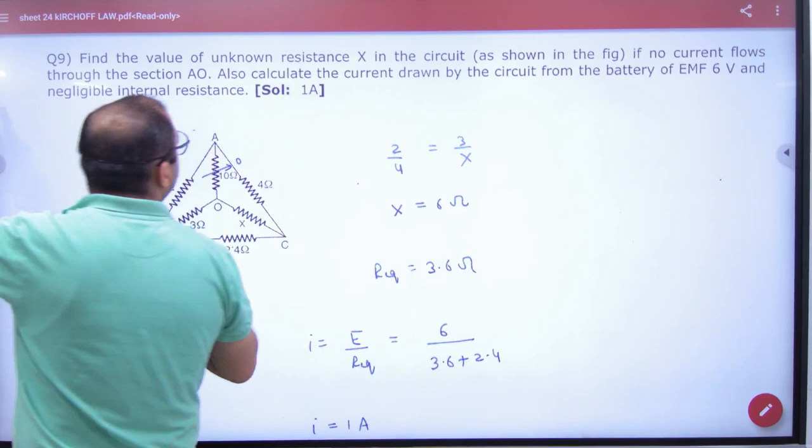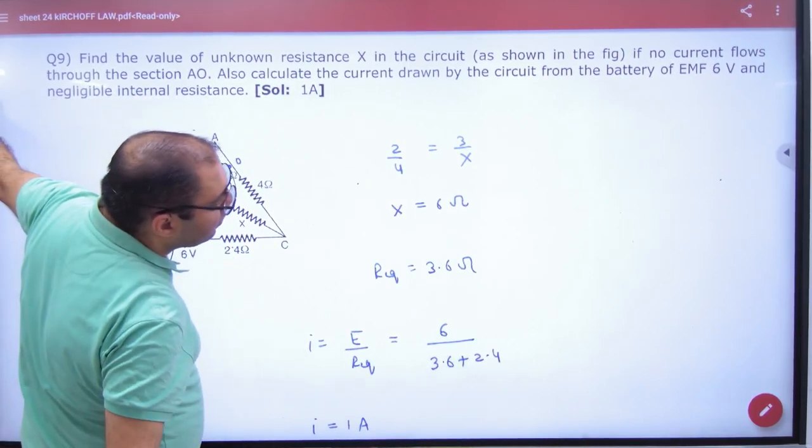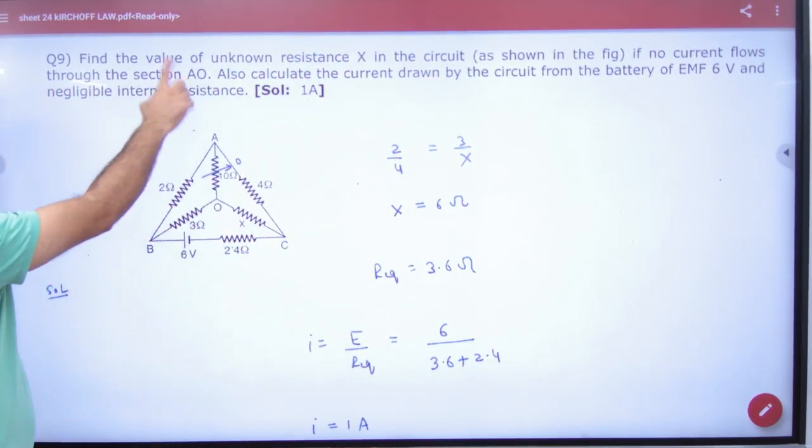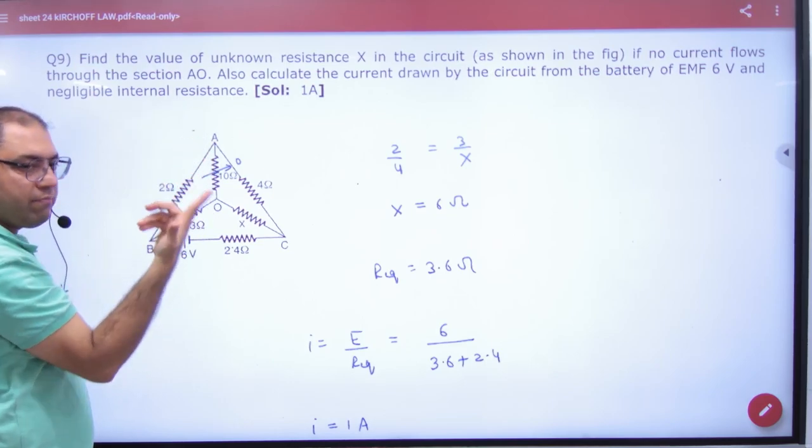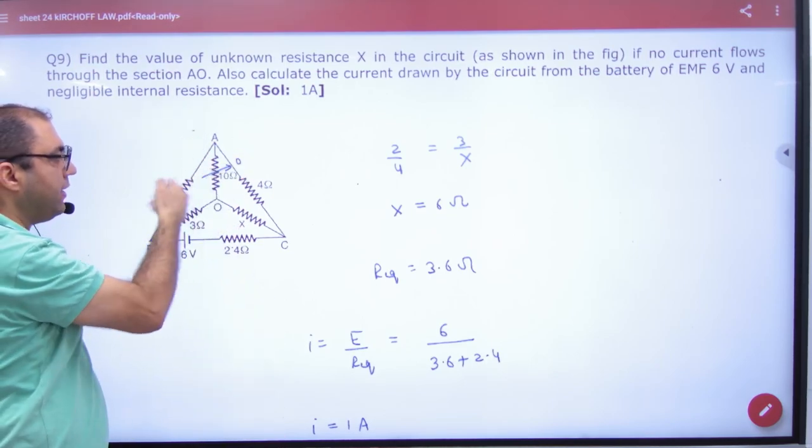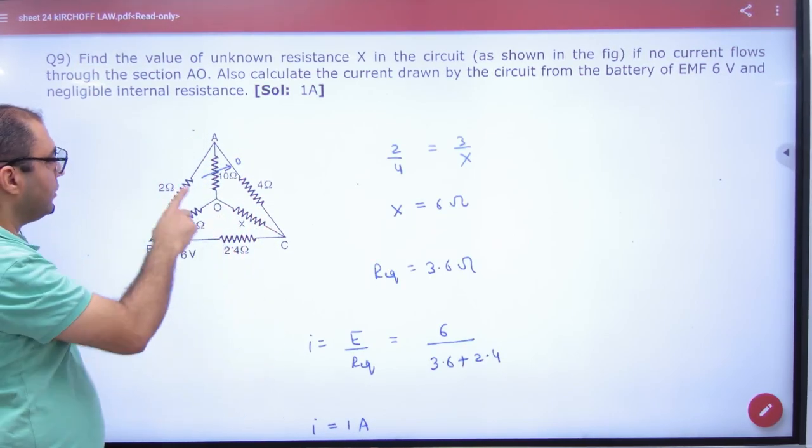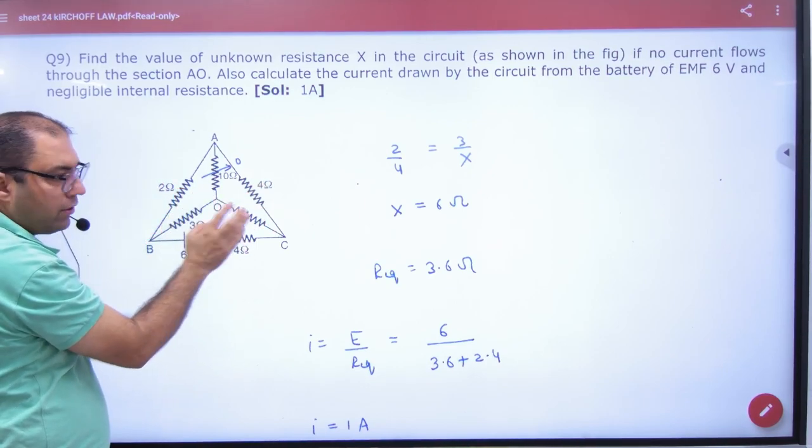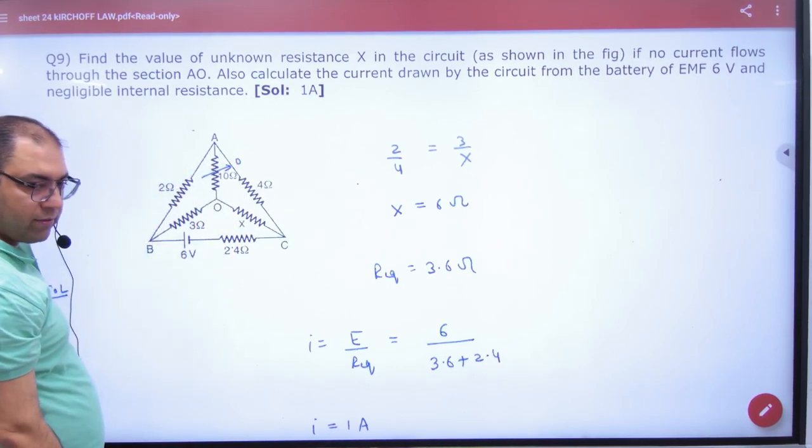It is the question that x which no current flow through section A. It is not current. When it is not current it means that it is balanced Wheatstone Bridge. That means 2 by 4 is equal to 3 by x, so x came out.